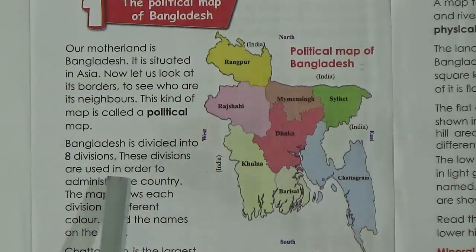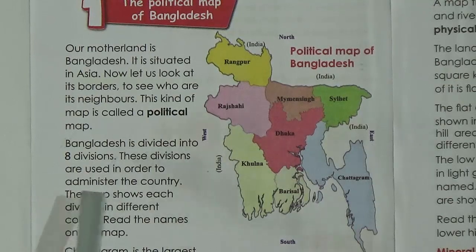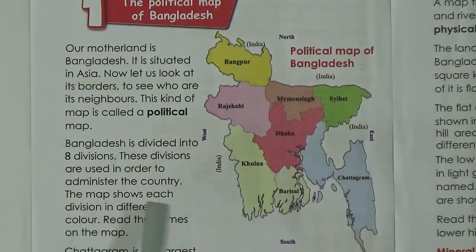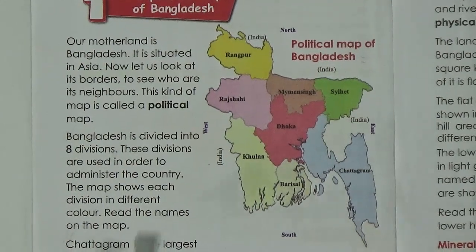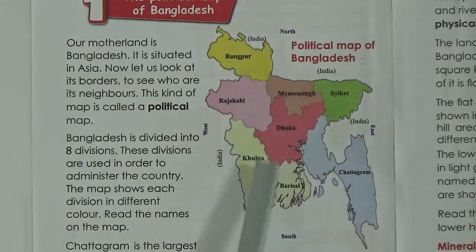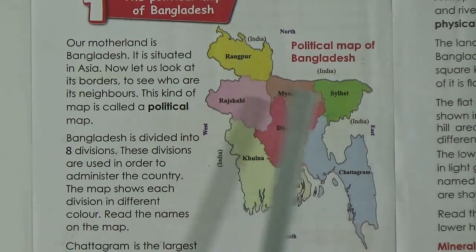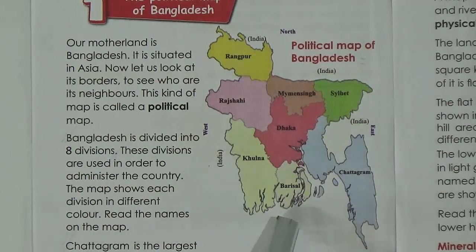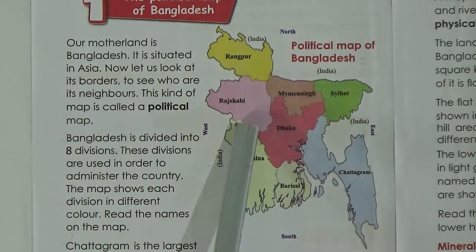There are eight divisions. These divisions are used in order to administer the country. The map shows each division in a different color. Students, look — there are different colors and these colors represent different divisions.